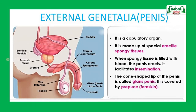The external genitalia of the male reproductive system is the penis. The penis is covered by two types of tissues: corpus cavernosum and corpus spongiosum. The tip of the penis is called the glans, which is covered by a skin called the foreskin or prepuce. This concludes the detailed view of the male reproductive system.